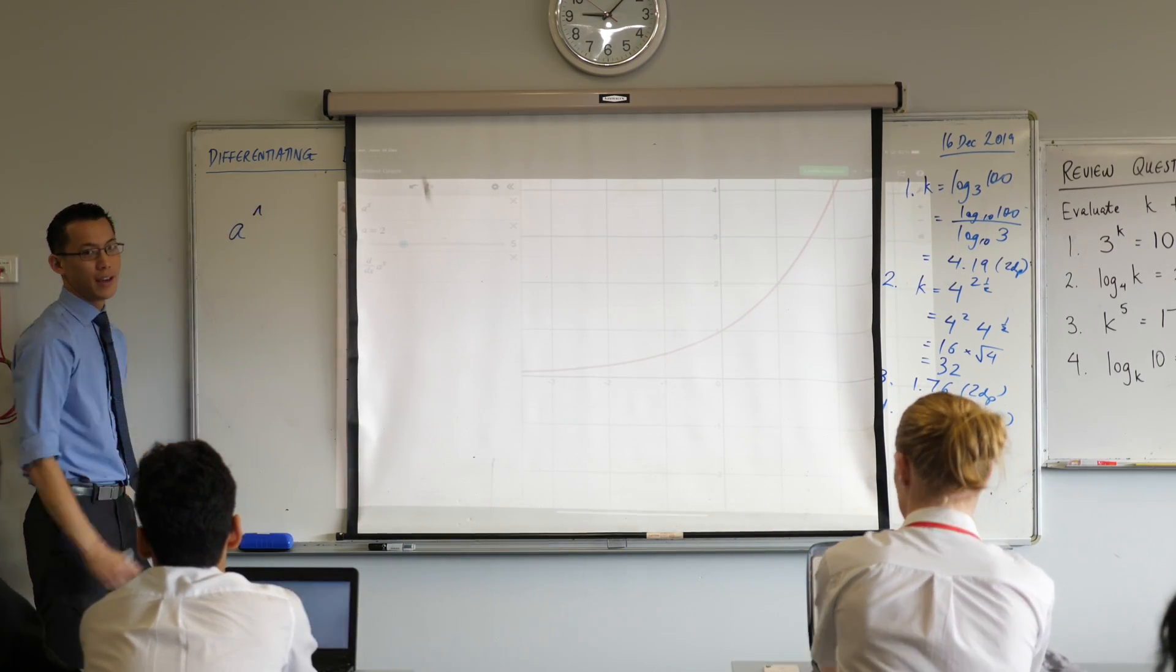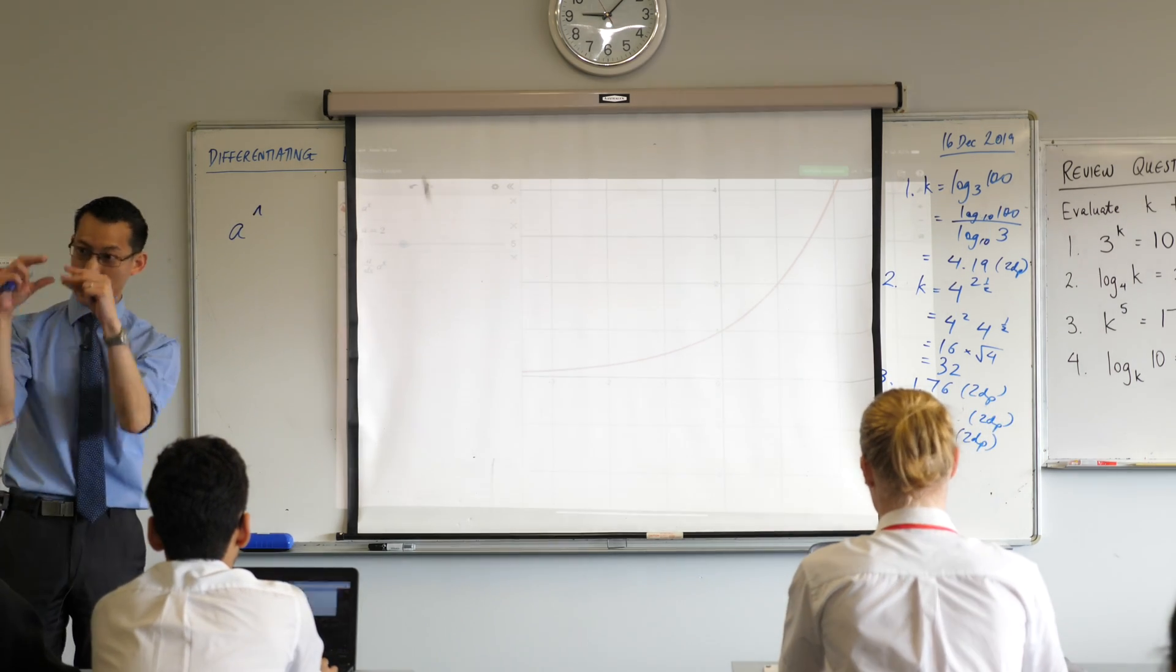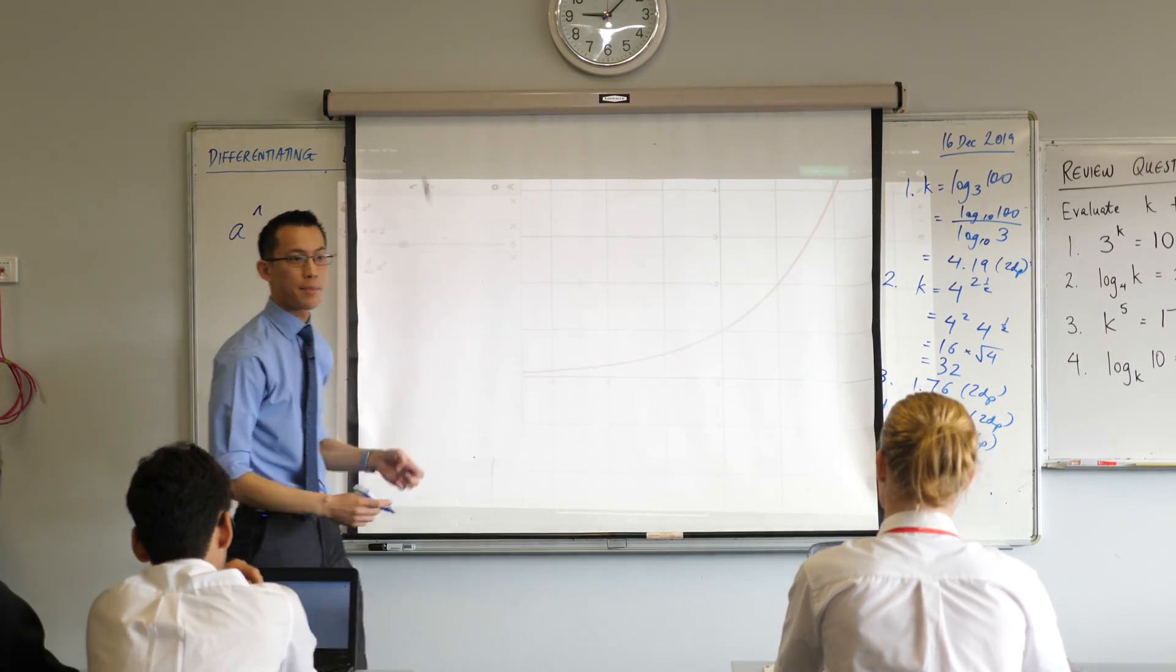If you type in a and type the hat, you should see your cursor goes up to the top to make a power, and then you just type in X and then you should get a to the power of X.